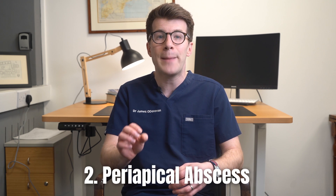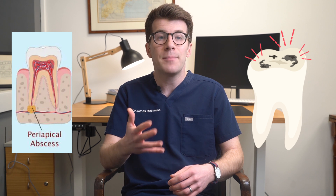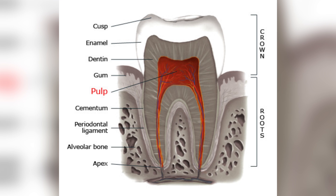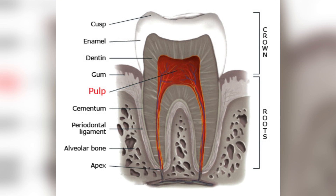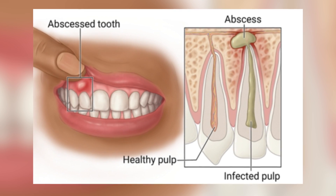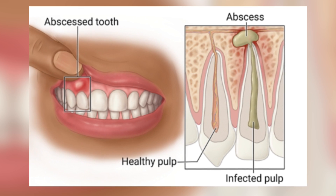The second is called a periapical abscess. This is an infection that forms at the tip of your tooth root. If you've got a tooth that's decayed, fractured, or damaged, bacteria can enter your tooth and spread to the pulp, which is the innermost part of the tooth that contains the nerves and blood vessels. When bacteria invade the pulp, infection can spread from the tip of your tooth root and eventually to the surrounding bone, causing an abscess to form.